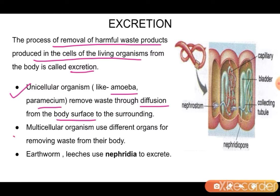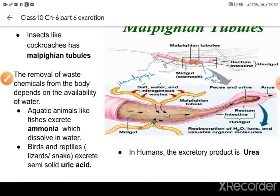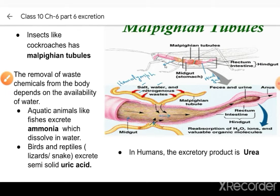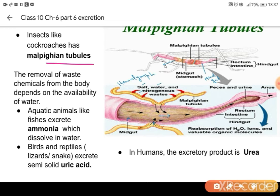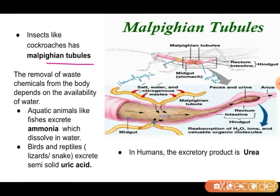In multicellular organisms we have specialized organs to remove body waste. For example, in earthworm and leeches we have nephridia to excrete the waste. But in insects we have malpighian tubules to remove waste. This is the structure of malpighian tubules.